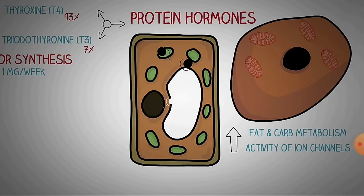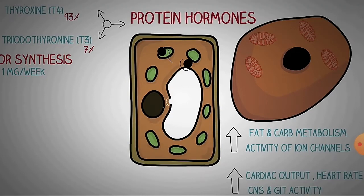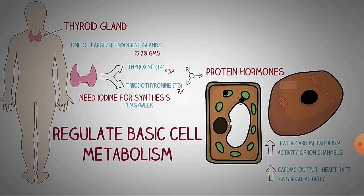Thyroid hormones are responsible for body development and structural development — meaning skeletal and muscular development. They are also responsible for mental growth and have effects on the brain and nervous system throughout. They also have an effect on cardiac output and heart rate — increasing both — and also on CNS and GIT activity.